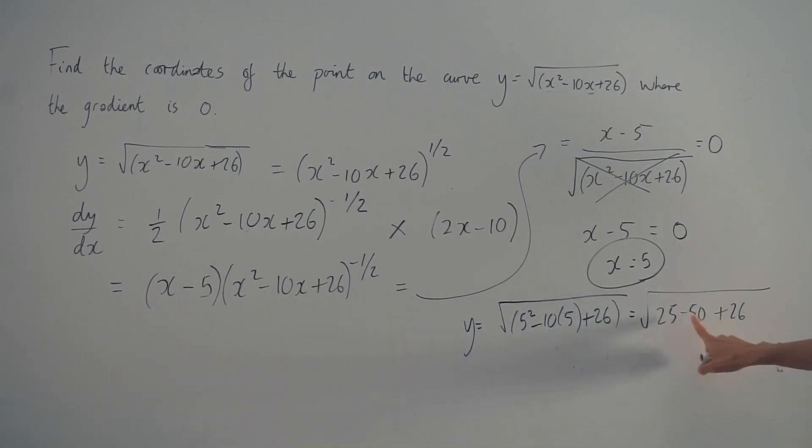So 25 take away 50 is negative 25. And remember, you're adding 26. Negative 25 plus 26 is 1. So the square root of 1 is 1. So that is the value of y.